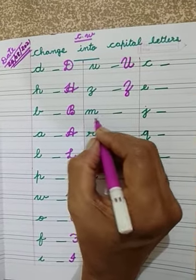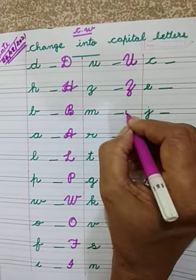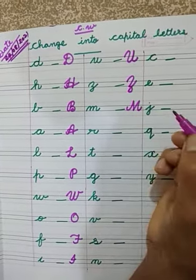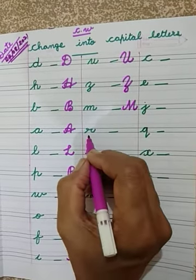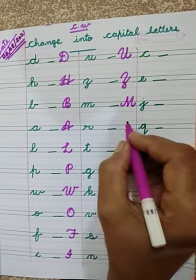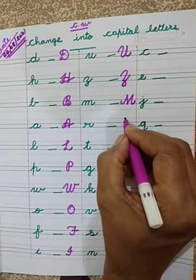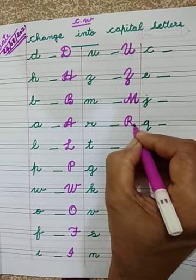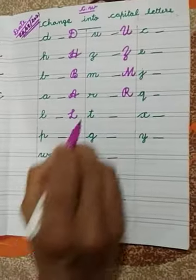Then next letter M — M4 — Mango. Then the capital letter of M. This is the capital letter of M. This is Cursive Small letter R. Then we have to write here Cursive Capital letter R. Start from the first line. This is Cursive Capital letter R.